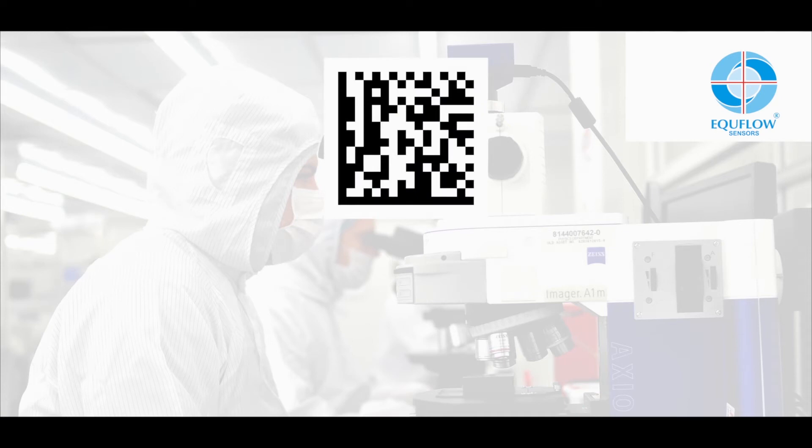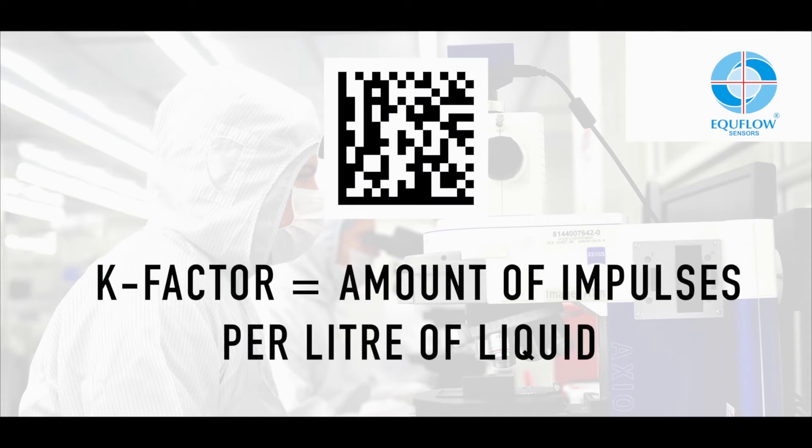The two-dimensional barcode partially consists of the K factor, which is the amount of impulses per liter of liquid based on water.